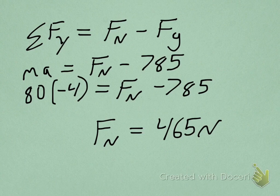So notice that when the elevator accelerated upwards, the normal force was larger than the force of gravity. So what the scale is reading is larger than the weight of the person. When the elevator accelerates downwards, the normal force is less than the weight. So what the scale reads is less than what the weight of the person is.